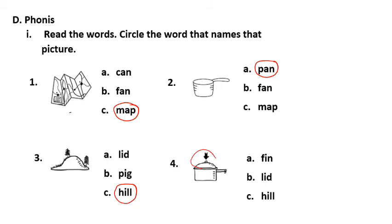Now this part is called a lid. Let's start reading. Is it A, fin, B, lid, or C, hill? It is B, lid.